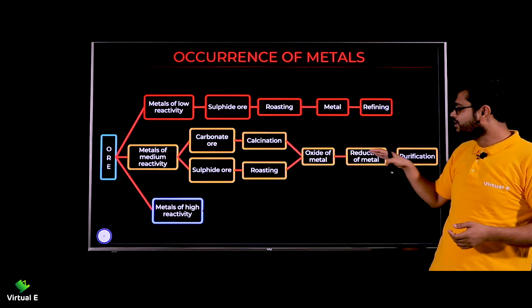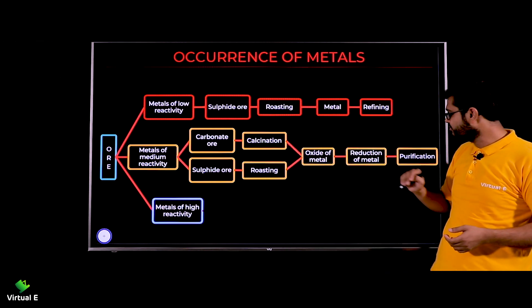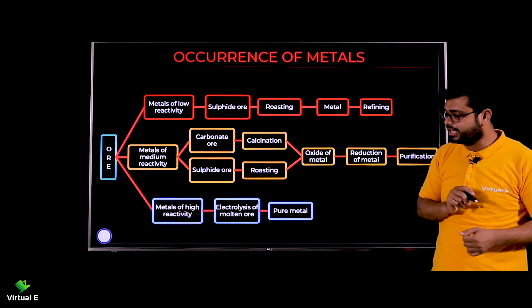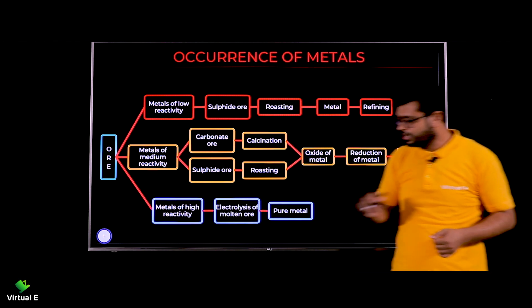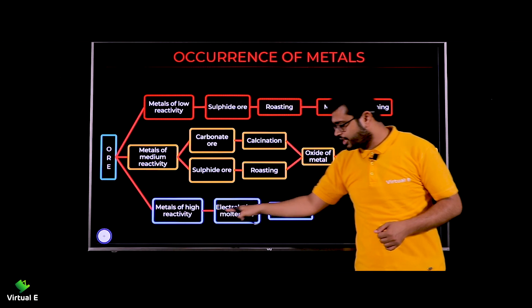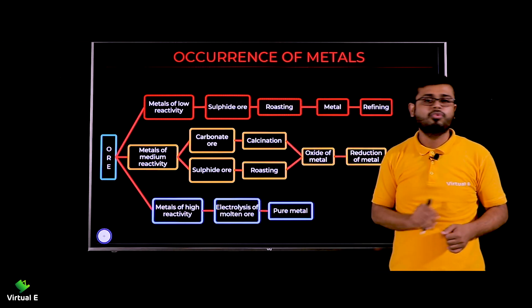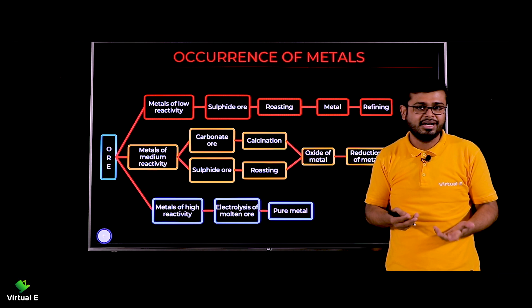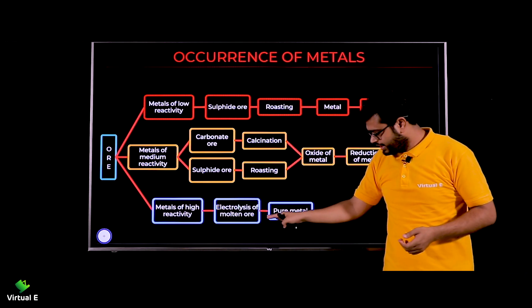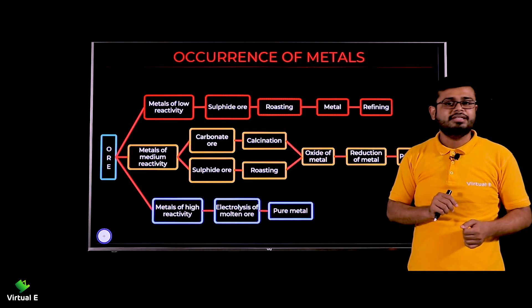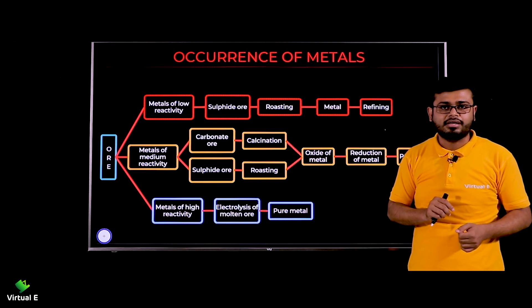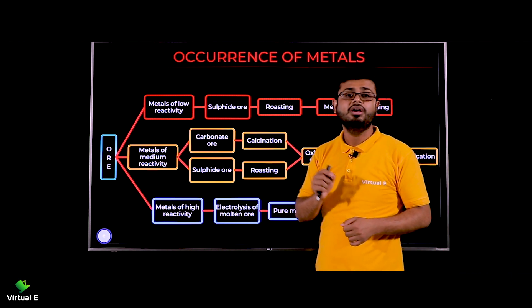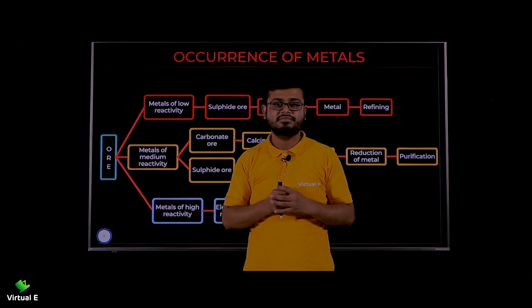For highly reactive metals, the method is electrolysis of molten ore. We will discuss what electrolysis is and how it is done, and finally you get the pure metal. So this is the very interesting topic of the occurrence of metals.